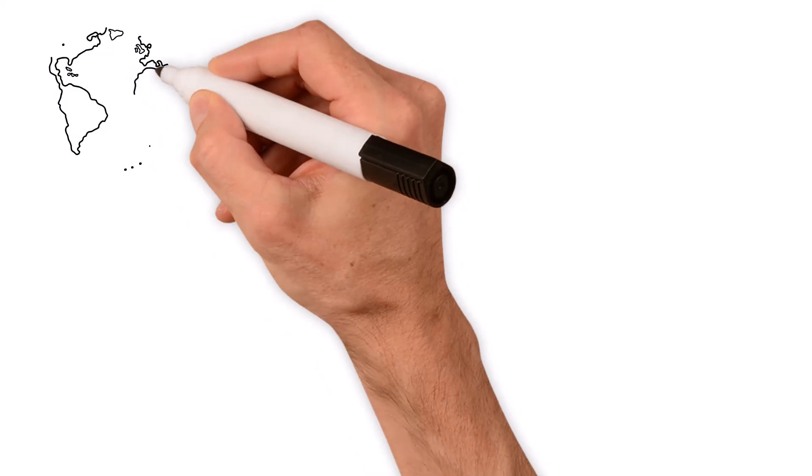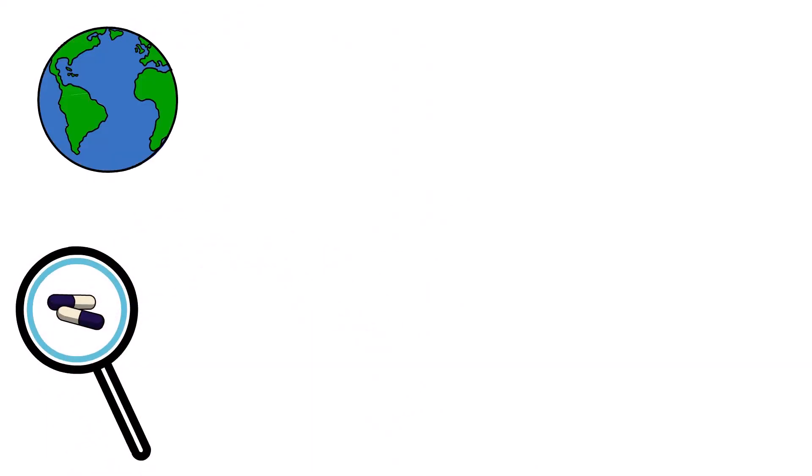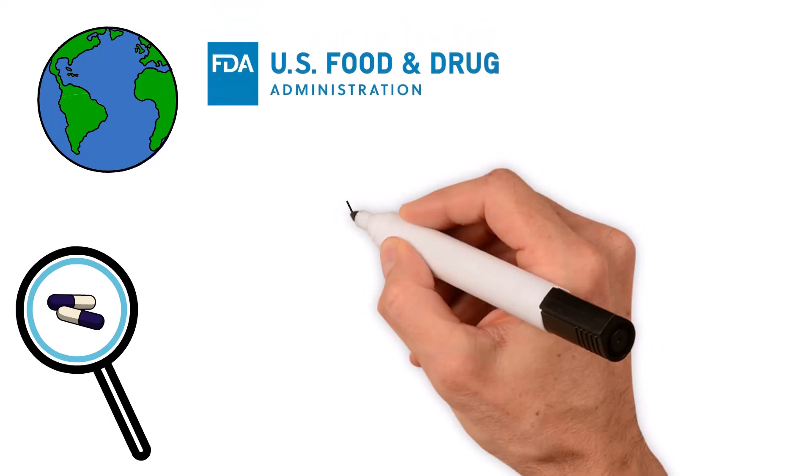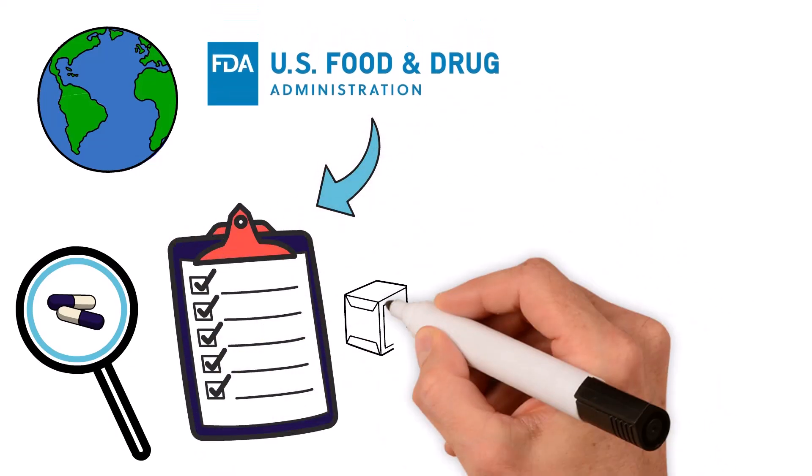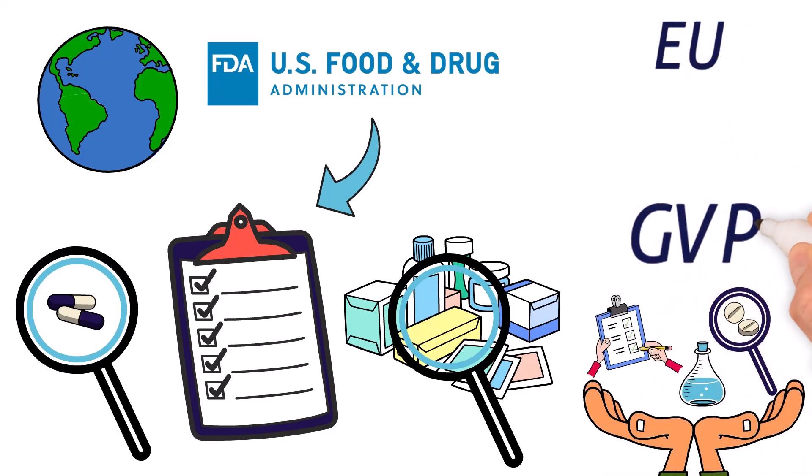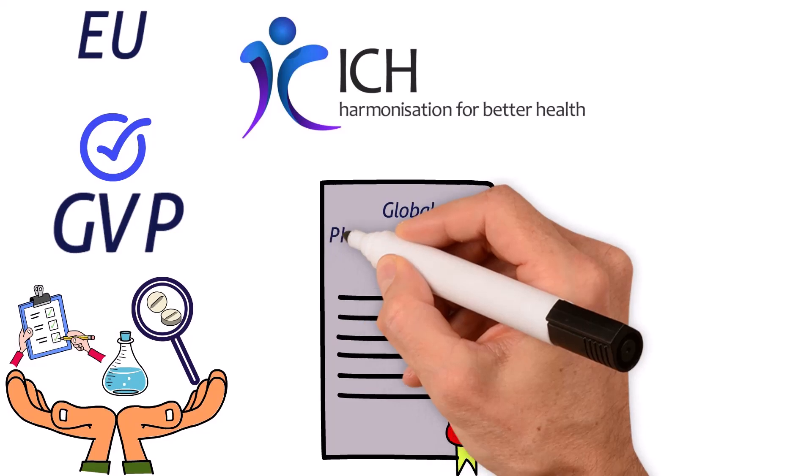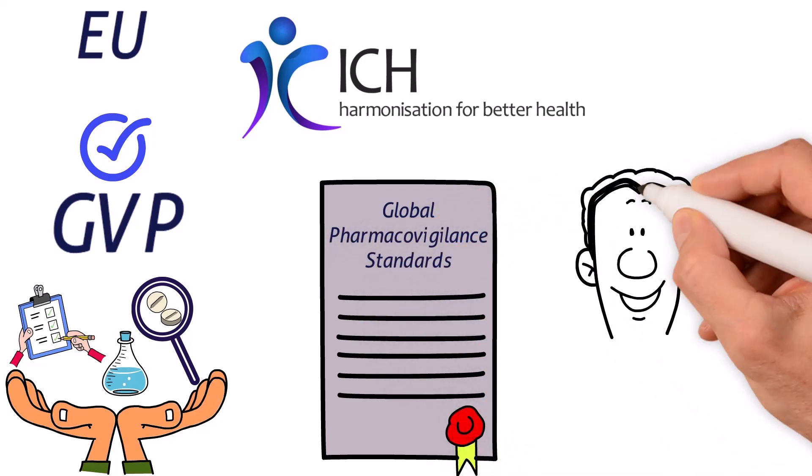Different parts of the world have different pharmacovigilance expectations. In the U.S., the FDA's post-market requirements tell you what you need to do to keep tabs on your products. In the EU, good pharmacovigilance practice, or GVP, is important, and the International Council of Harmonization, or ICH, has some global pharmacovigilance standards you can follow.